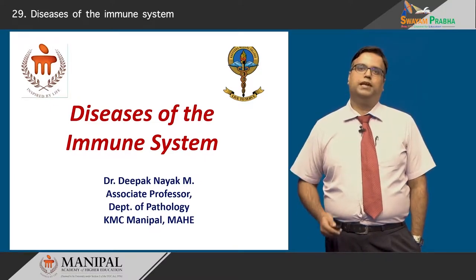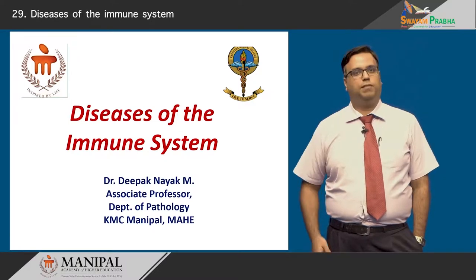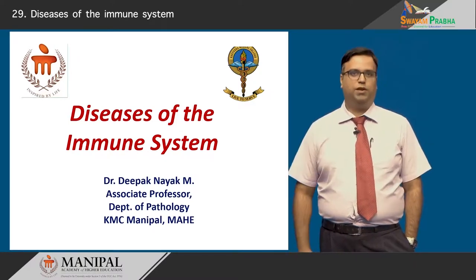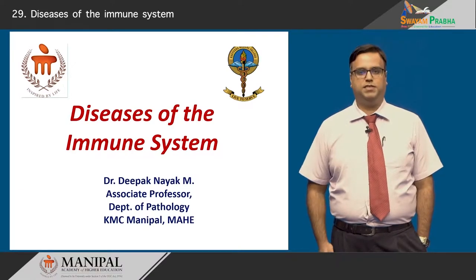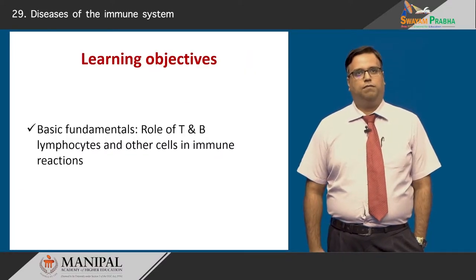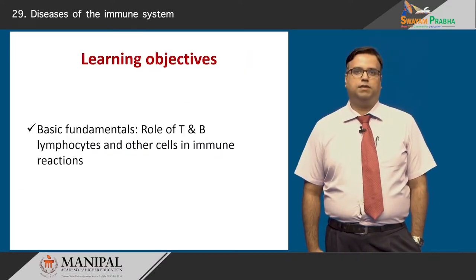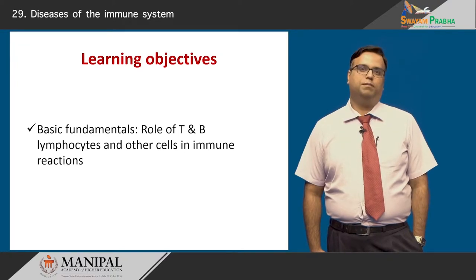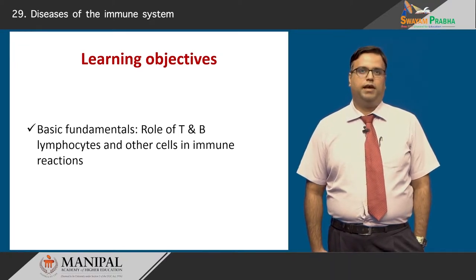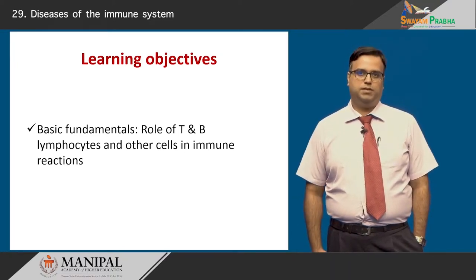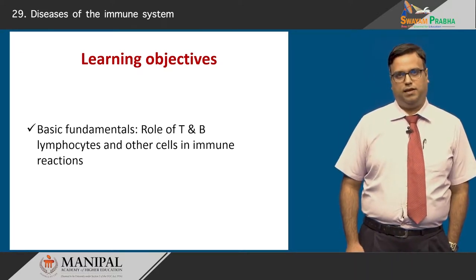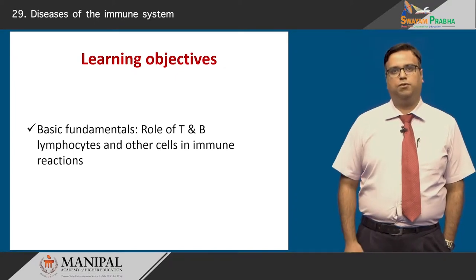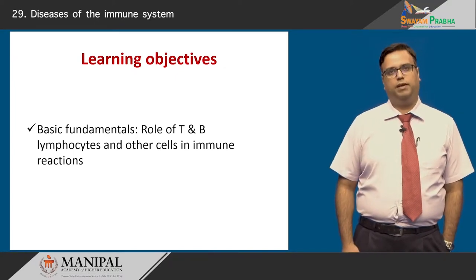We know that the immune system is responsible for multiple reactions in the body. We will also try to know if there is a deleterious side to the immune system. We will tackle the basic fundamentals — the role of B and T lymphocytes along with other cells such as macrophages, dendritic cells, and NK cells, and learn what roles they play in the immune system.